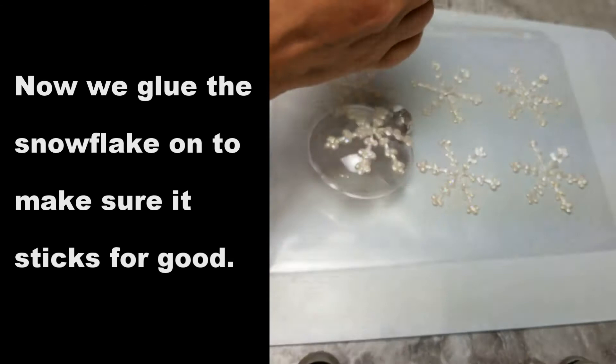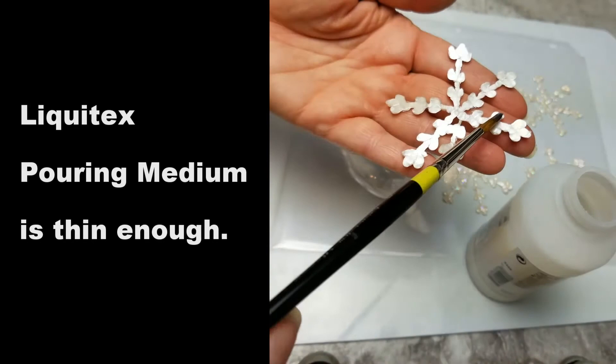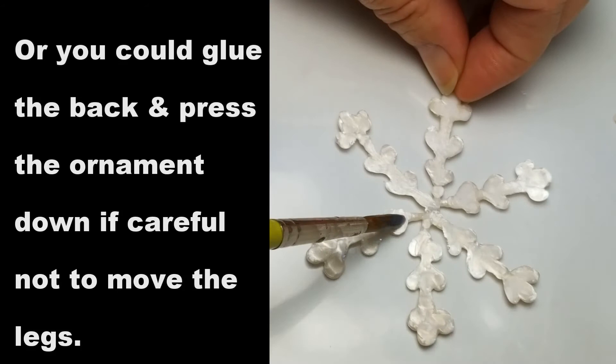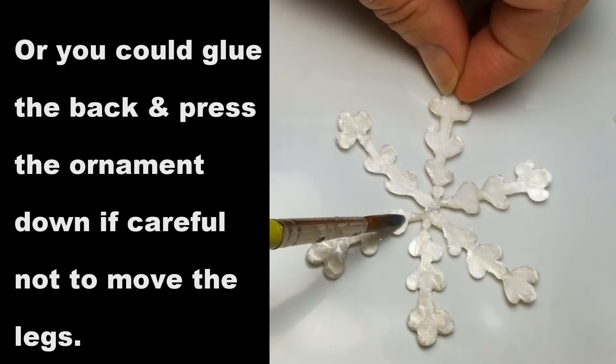Now we glue the snowflake on to make sure it sticks for good. Liquitex pouring medium is thin enough. Get your aim really careful and place without moving around to avoid glue marks. Or you could glue the back and press the ornament down if careful not to move the legs. That way you might be able to position it better.